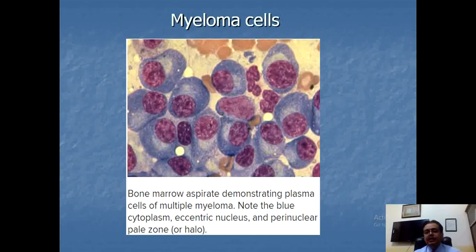These are the myeloma cells in which the cytoplasm is blue, the nucleus is eccentric — pushed to one side — and there is a pale zone surrounding the nucleus known as a perinuclear pale zone or halo. These are typical of plasma cells. Once you perform the bone marrow biopsy and microscopy and find these kinds of cells, you should instantly conclude that these are myeloma cells and the diagnosis of multiple myeloma is certain.